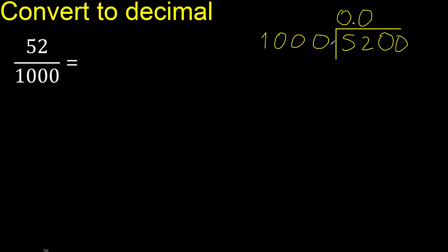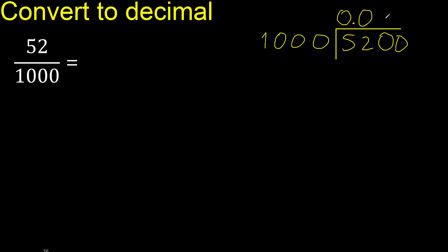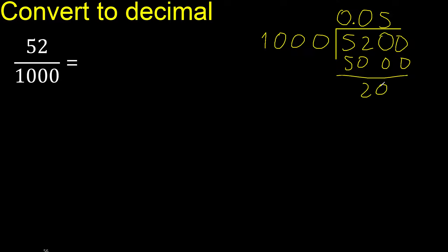Is not less. 1000 multiplied by which number is nearest to 5200 but not greater? Multiplied by 6 is 6000 — 6000 is greater. Multiplied by 5 is 5000 — ok, is not greater. Subtract: remainder is 200. There is no number that goes down, therefore complete — always complete with 0.